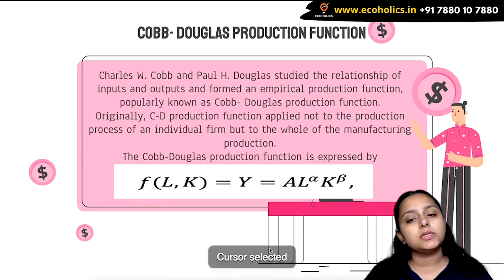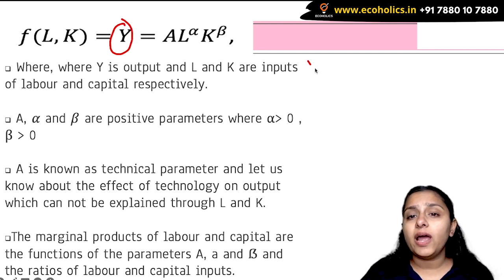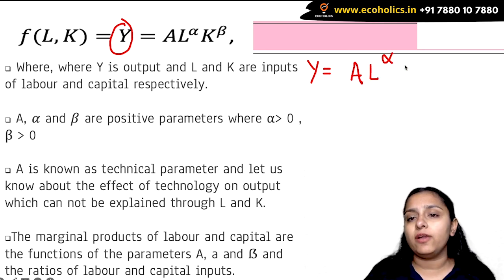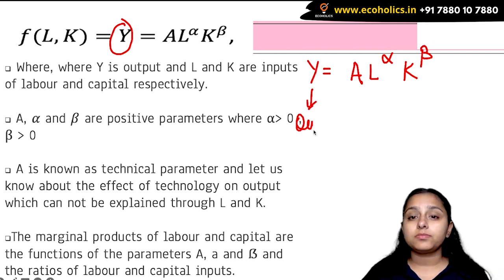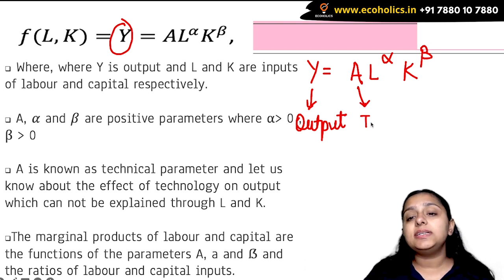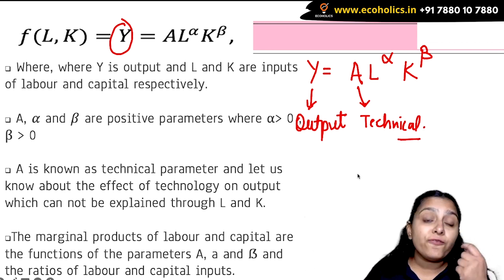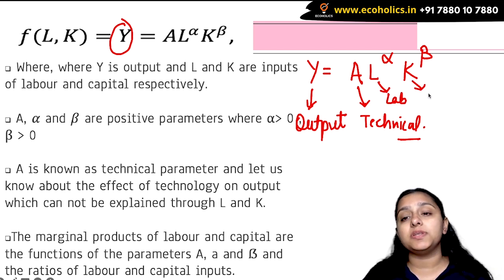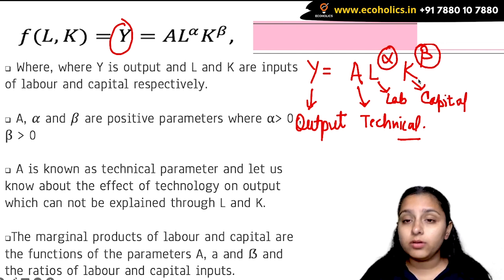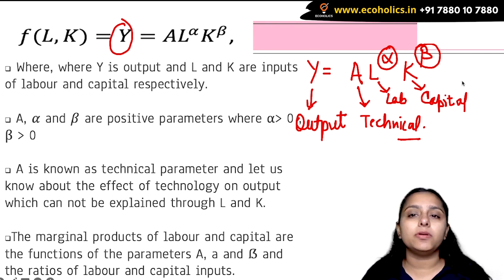In the equation Y = A · L^α · K^β, Y is the output being produced. A is the technical parameter — it tells you the effect of technology on the output. L represents labor, K represents capital. Alpha and beta represent the elasticity of output with respect to labor and capital respectively.